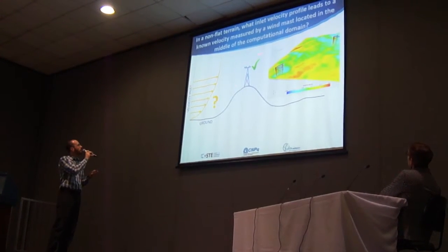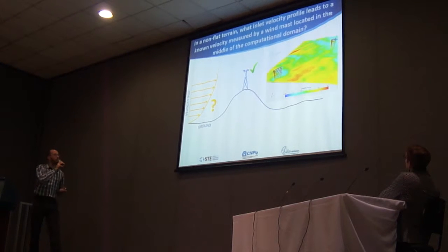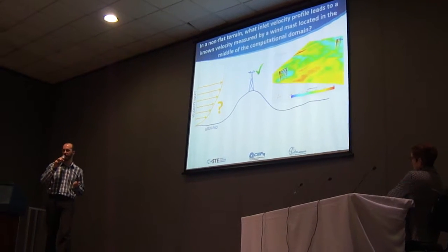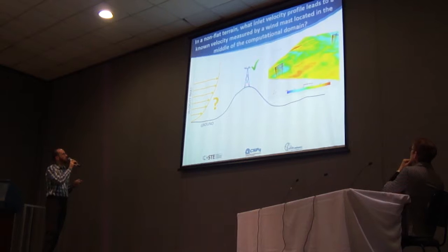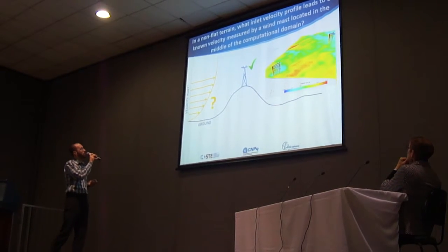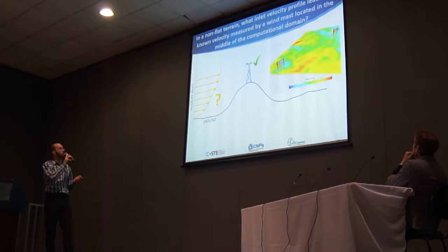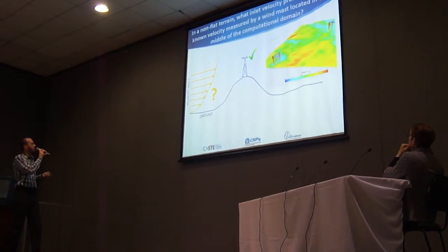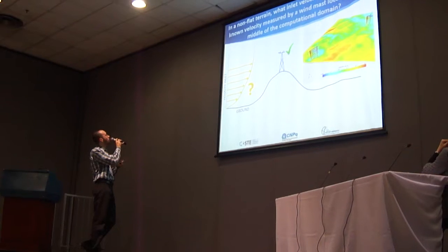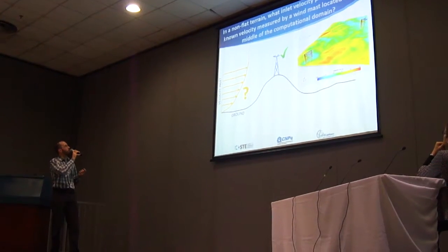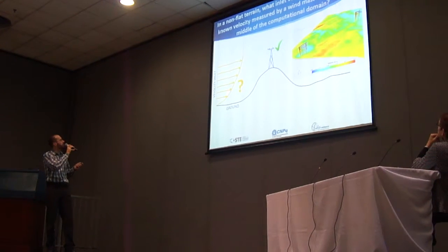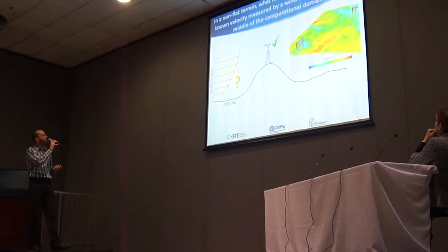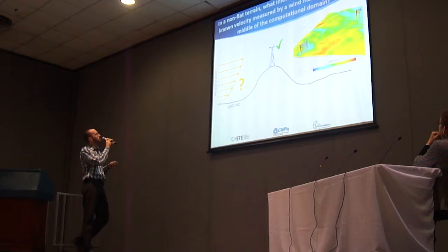We have a problem. The input for the CFD — the mean velocity obtained from the anemometer — is measured in the middle of our terrain. But for the CFD simulation, we need, as an input, the inlet profile of the wind. So we have a question: in a non-flat terrain, what inlet velocity profile leads to a known velocity measured by a wind mast that is located in the middle of the computational domain?